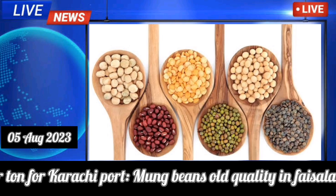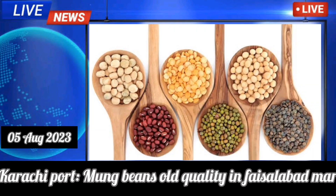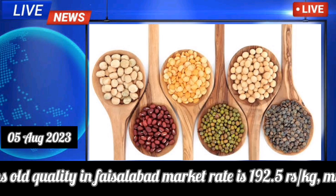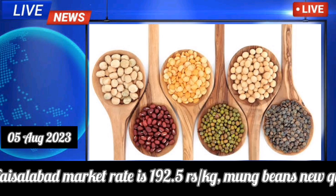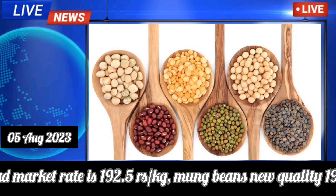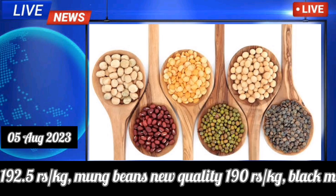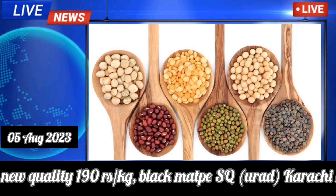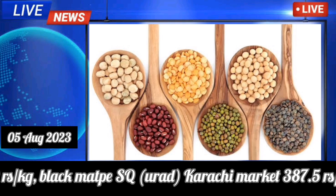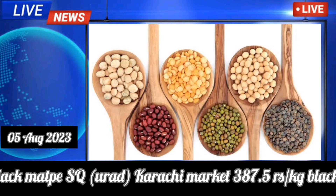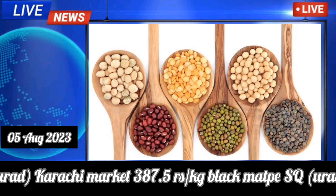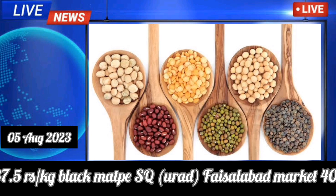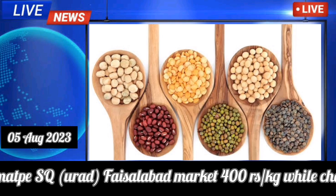Mung beans old quality in Faisalabad market rate is 192.5 rupees per kilogram. Mung beans new quality is 190 rupees per kilogram. Black mape SQ quality Karachi market is 387.5 rupees per kilogram, and Faisalabad market is 400 rupees per kilogram.